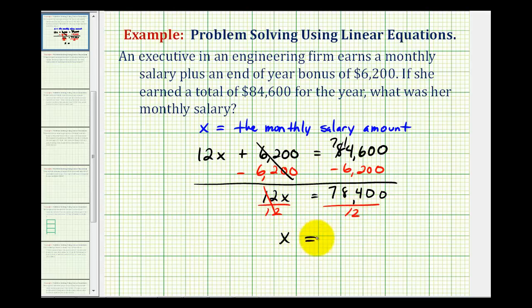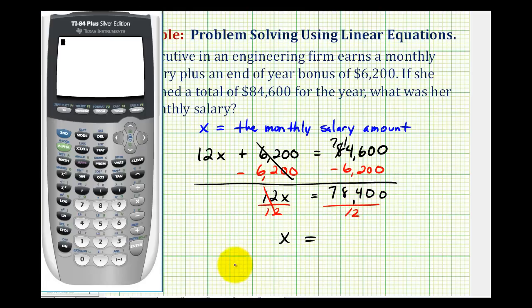So we have x equals this quotient here. Now we've done several of these computations by hand. Let's go ahead and determine this quotient on the calculator. We have $78,400 divided by 12. So notice how we have $6,533.3 repeating.